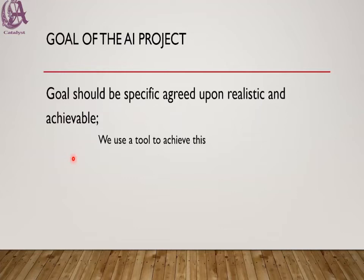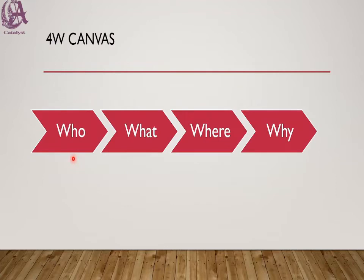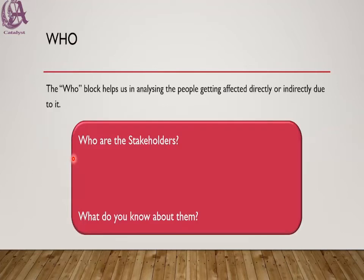There is a tool involved to achieve this particular goal, and that tool is the Four W Problem Canvas. As you can see, there are four W's in it. The four W's are: first is Who, then What, then Where, and Why. Let's see what each of these W's means.